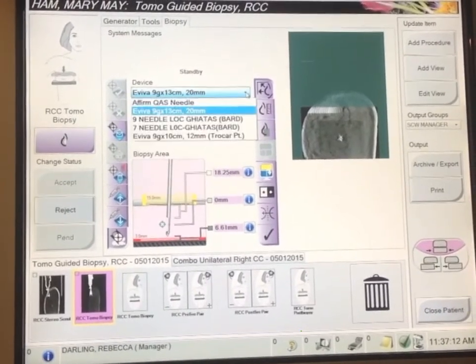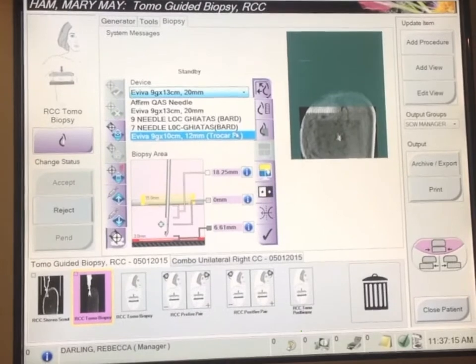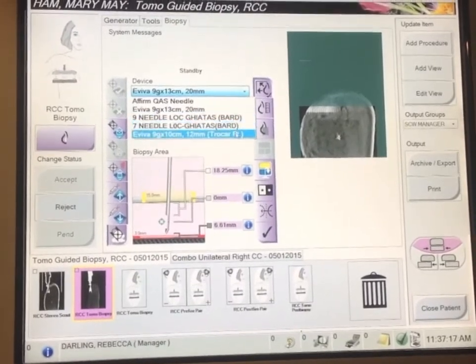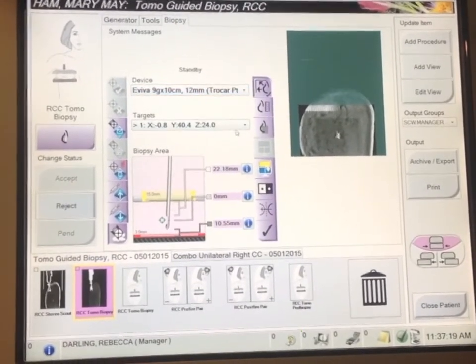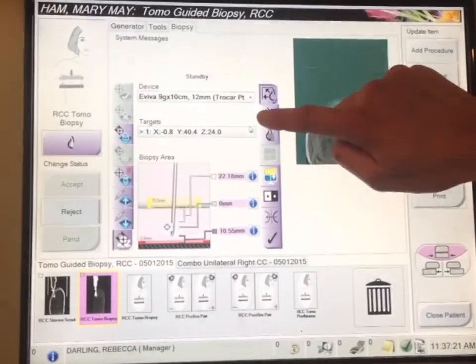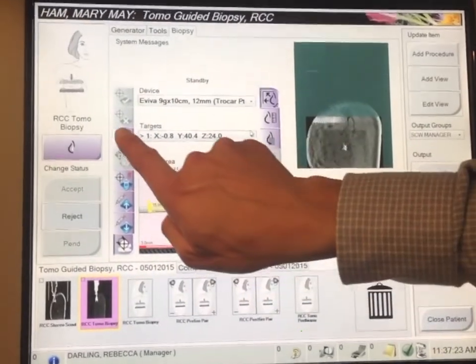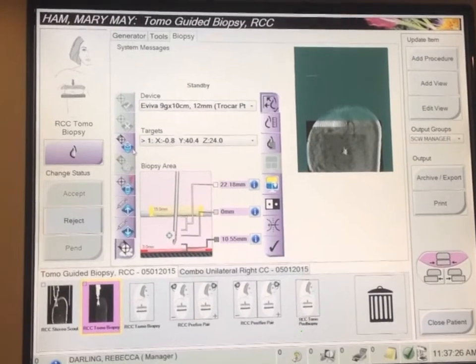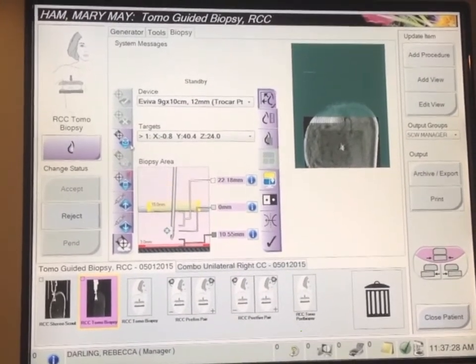You then want to select that check mark on the left which will send it to the device. If it's not the needle you want, select the correct needle. In this case we're using the 12mm Aviva Petite needle. And then finally, once you've confirmed your targets, touch that little mail sign, the envelope sign and it will send it to the gantry.